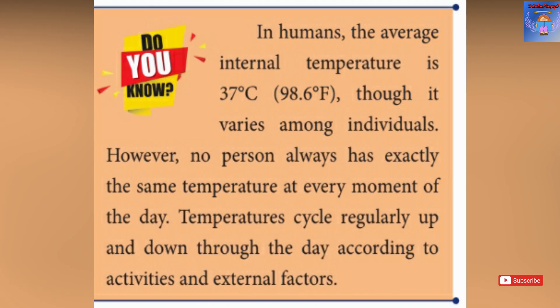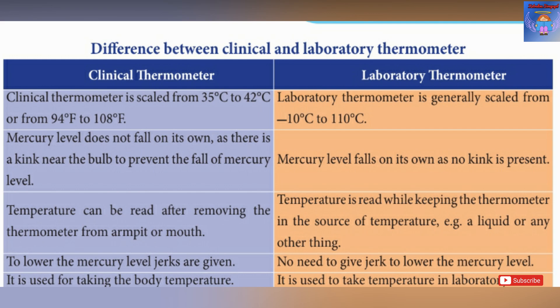The normal person's body temperature is 37 degrees Celsius, which is 98.6 degrees Fahrenheit. Body temperature may vary throughout the day — it can go up and down depending on activity. The range of the laboratory thermometer is minus 10 degrees Celsius to 110 degrees Celsius.